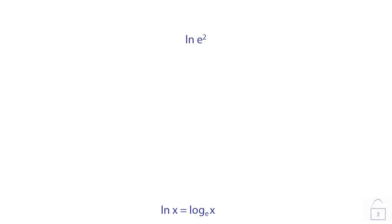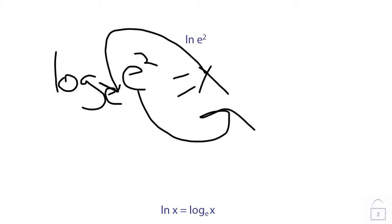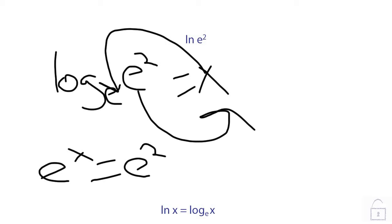Here we have the ln of e squared. Now we're going to just want to rewrite this, so we'll rewrite it as the log base e of e squared. This might look a little bit confusing because we have those two e's, but we'll just set this equal to x and we can rearrange it and then it'll look a little bit better. This x becomes the exponent for this e and this e squared comes over to the other side, so we get e to the x is equal to e squared. Now we can just drop the e's and we get x is equal to 2.